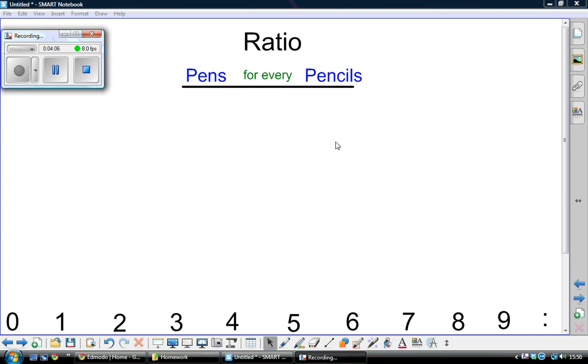The relationship between two amounts. We could say that you have four pens for every... What should we say? Let's say three pencils. Four pens for every three pencils.